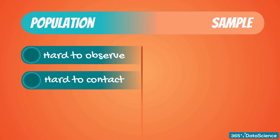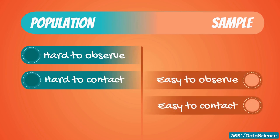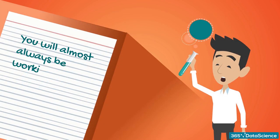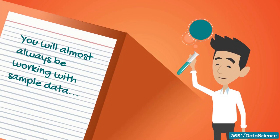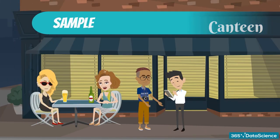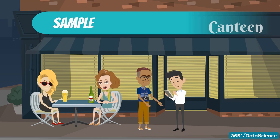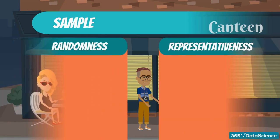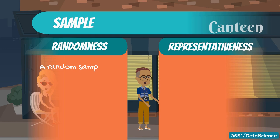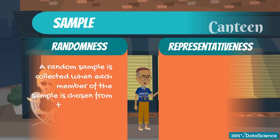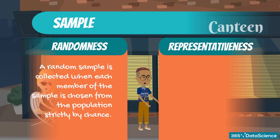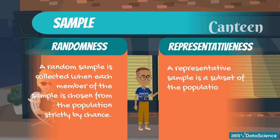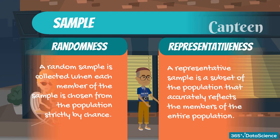Populations are hard to observe and contact. That's why statistical tests are designed to work with incomplete data. You will almost always be working with sample data and make data-driven decisions and inferences based on it. Since statistical tests are usually based on sample data, samples are key to accurate statistical insights. They have two defining characteristics: randomness and representativeness. A sample must be both random and representative for an insight to be precise.